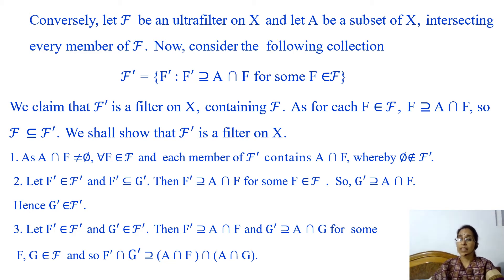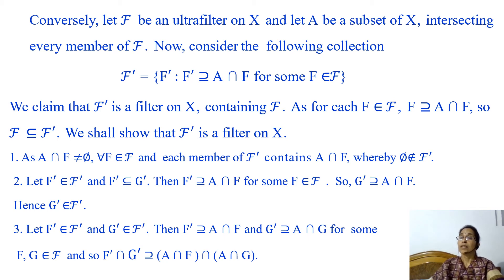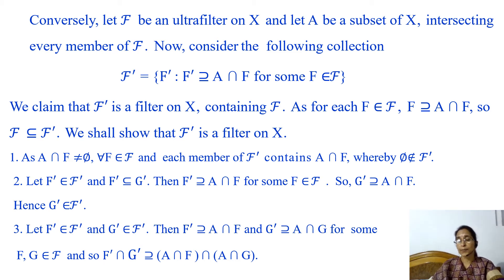Consider the following collection F', consisting of all those subsets F' which contain A ∩ F for some F in filter F. We claim that F' is a filter on X containing filter F. For each F in F, F contains A ∩ F, so by definition of F', F belongs to F'. As each member of filter F belongs to F', filter F is contained in the collection F'.